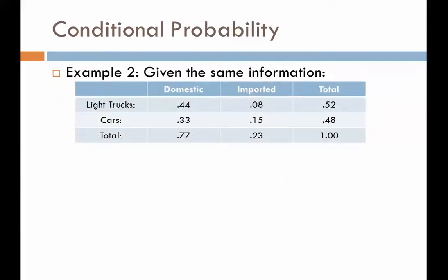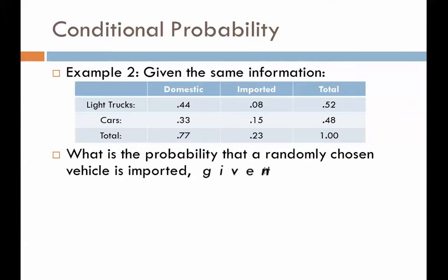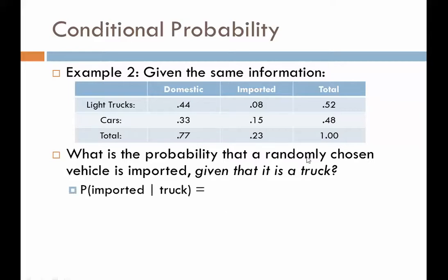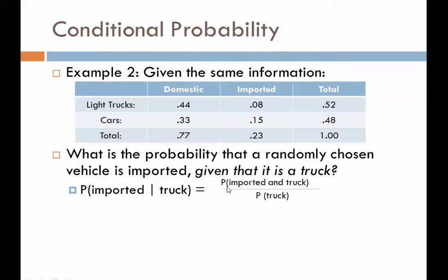Let's look at a couple more examples. What's the probability that a randomly chosen vehicle is imported given that it's a truck? Now we've switched the two variables — we're assuming whatever we pick is going to be a truck, so we're only considering the truck row. We look at where imported trucks would be, which is the same intersection as before — 8% of the total population. Since we're only considering trucks, we divide by however many trucks there are overall: the intersection of truck and import divided by the probability of trucks.